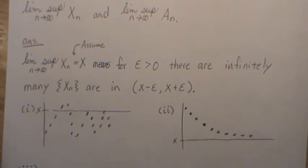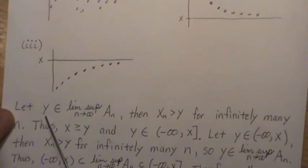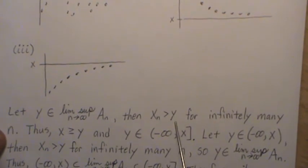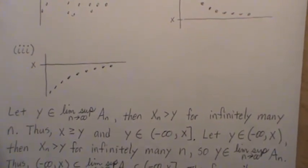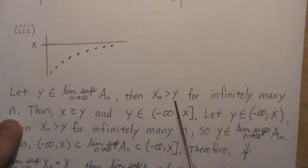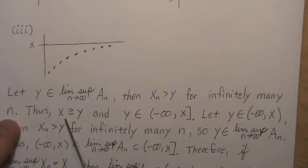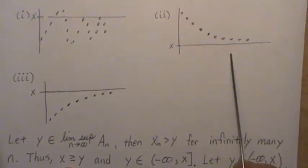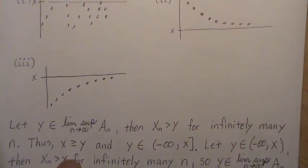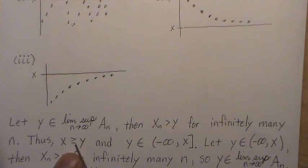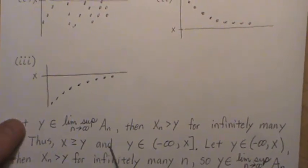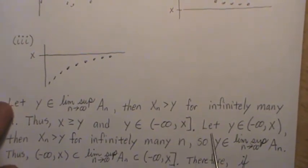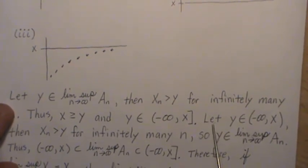With that background, let y be in the limit supremum of Aₙ. That means y < xₙ for infinitely many n. Since the limit supremum of xₙ is x, it follows that y must be less than or equal to x. The equality case depends on the specific setting — I'll let you verify that the ≤ is needed. This means y is in the interval (-∞, x].